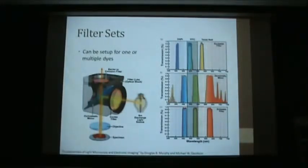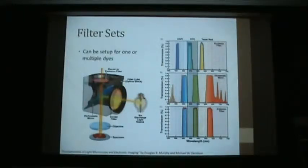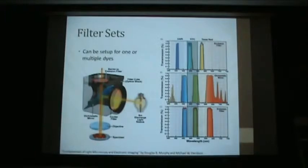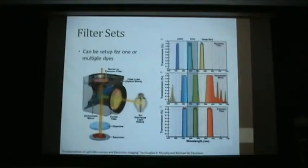These filters often go in a filter cube. Here we have a mercury lamp; it goes into an exciter filter which picks out the color we need to excite the dye. It's reflected off a dichroic mirror — dichroic means two colors in Greek; it reflects one color and transmits a different color. So here it will reflect the green light down to excite the specimen, and the red emitted light comes back up through the dichroic mirror. Then the emission filter cleans up any remaining excitation light. You can get filter cubes for a single color or for three or four colors at once.